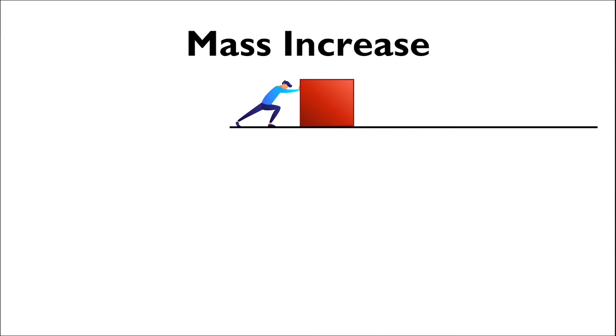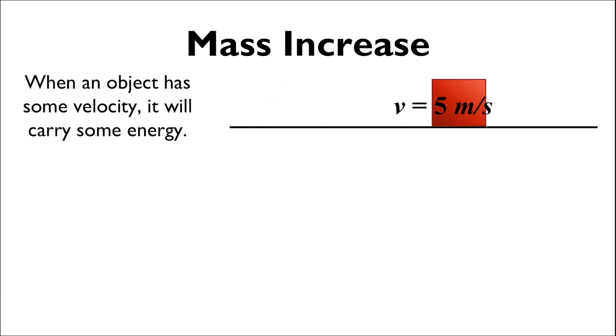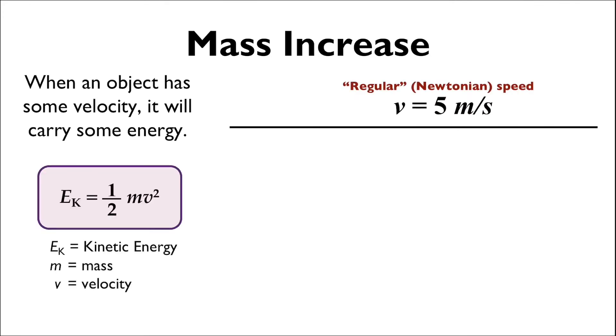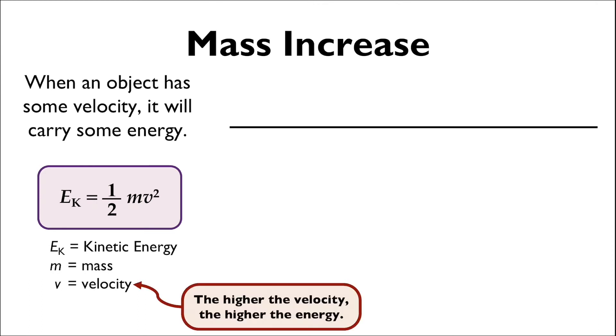The concept of mass increase can be explained with the following approach. When you have an object moving with some velocity, like five meters per second or some similar regular velocity, the object will carry some energy. The amount of energy it carries depends on the mass, but more importantly, on the velocity. The higher the velocity, the higher the energy.